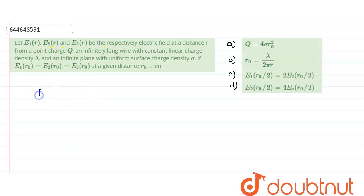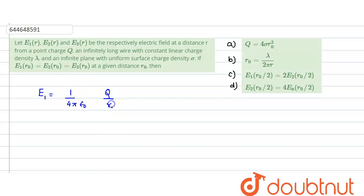E1 is the electric field due to a point charge, so we can directly write the E1 value as 1 over 4π epsilon times Q divided by r². At a distance r₀, it would be Q divided by r₀ squared.